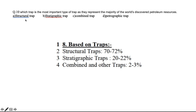Question nine: which is the most important type of trap, representing the majority of the world's discovered petroleum resources? Structural traps account for 70 to 72 percent of discovered resources. So mark A — structural traps.